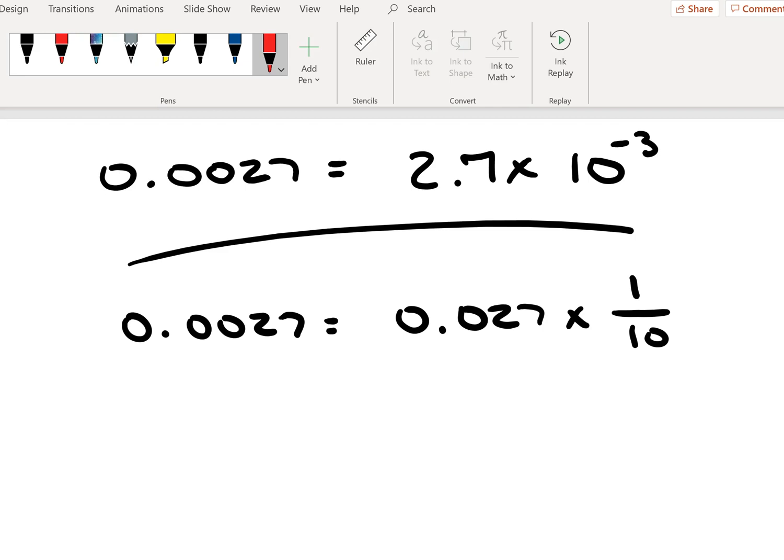In this case, we have 0.027 times 1 over 10. And at this step, I encourage you to pause the video and verify with your calculator that this is indeed correct.